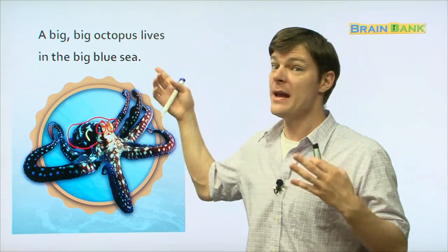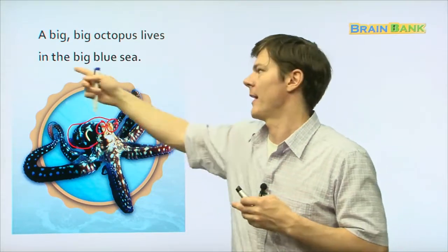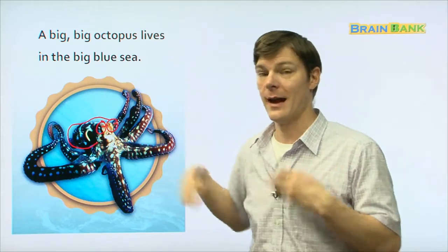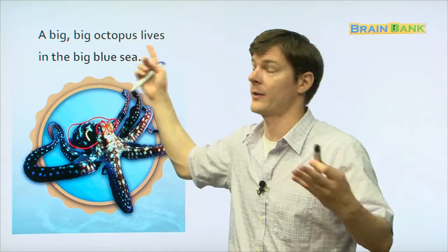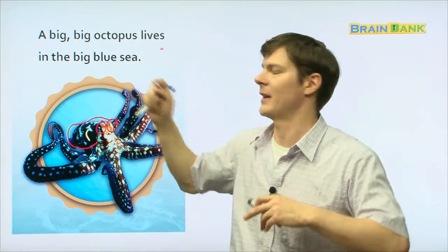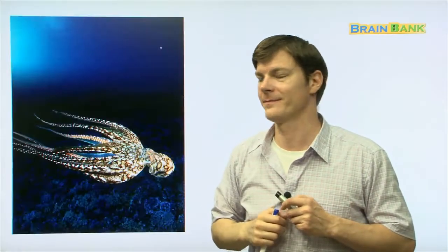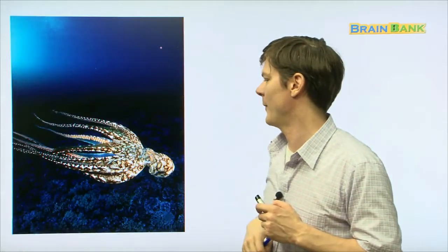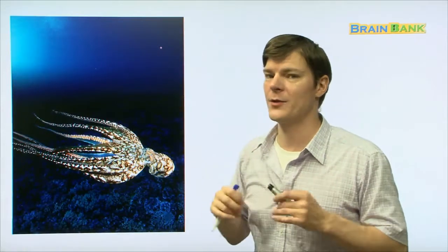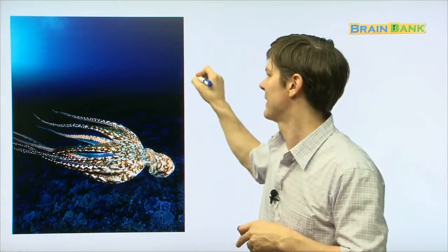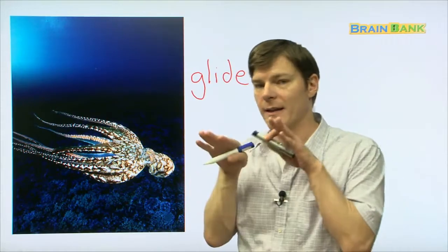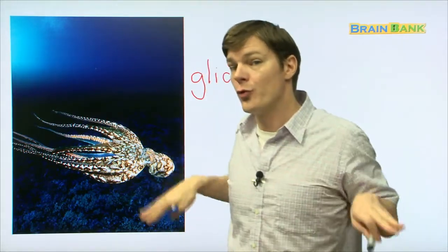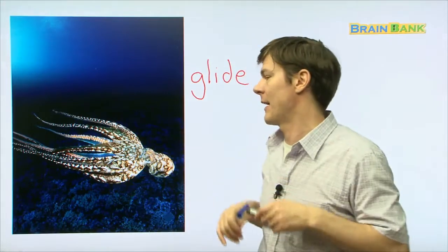A big, big octopus lives in the big blue sea. Everyone repeat with me. A big, big octopus lives in the big blue sea. There he is, swimming along. And it's really interesting how they swim. They kind of glide. G-L-I-D-E. Like this. They kind of glide through the ocean.